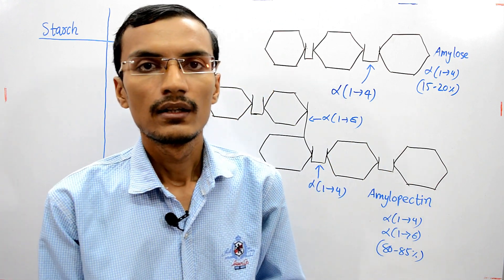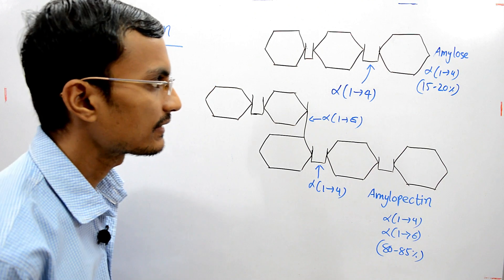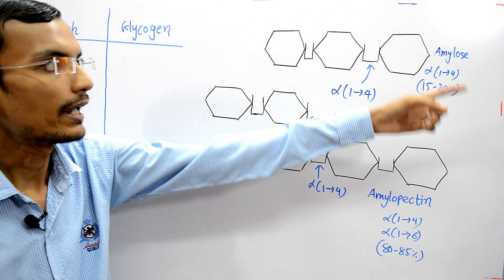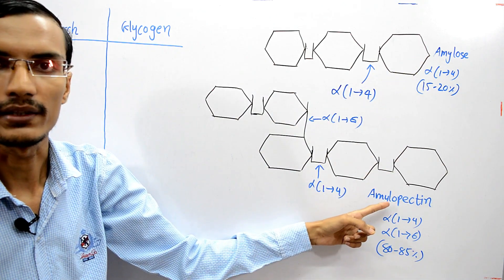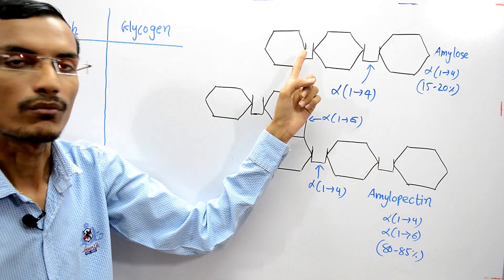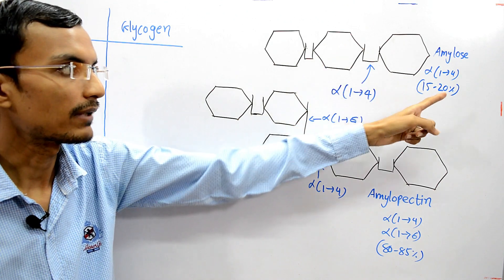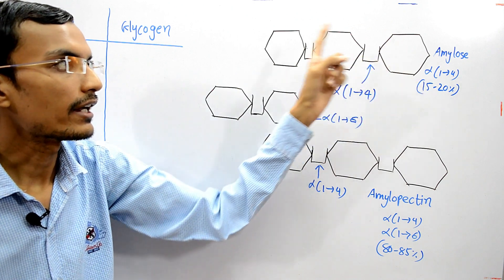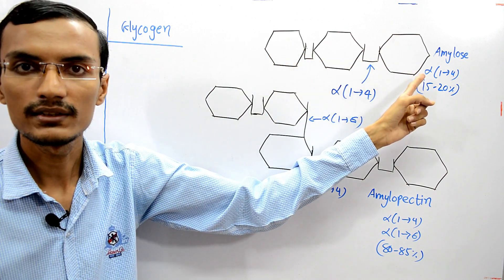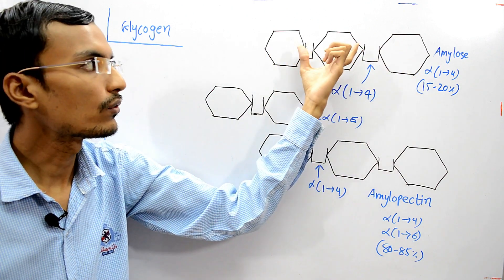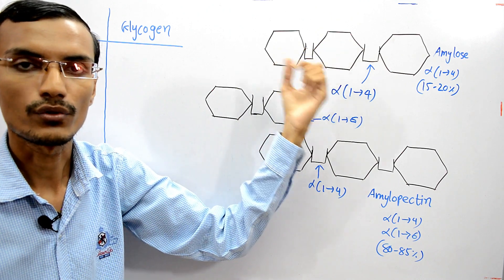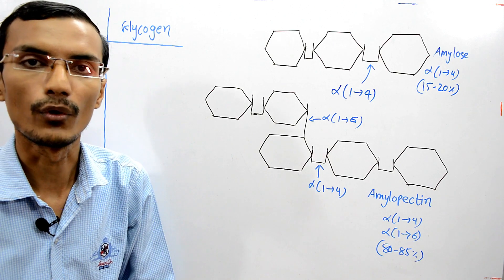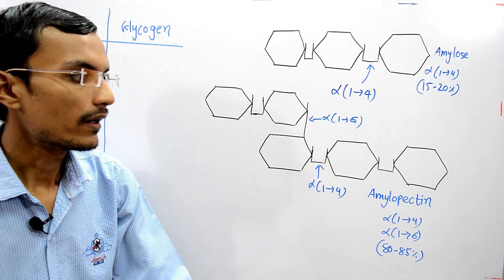Starch consists of two components: amylose and amylopectin. Amylose is the water-soluble component, present at around 15 to 20% in starch. Amylose is an unbranched structure, and the two glucose molecules are linked together by alpha 1-4 glycosidic bonds.